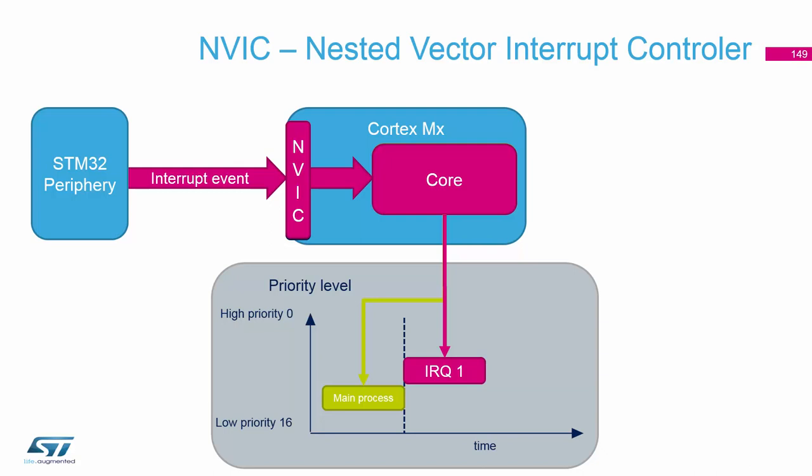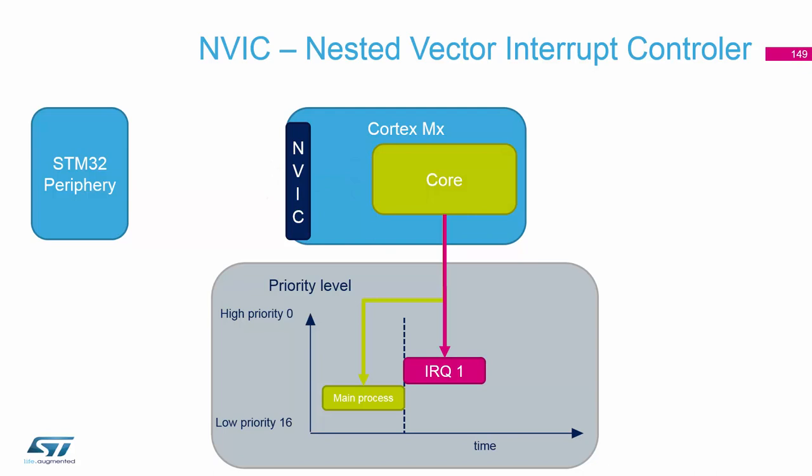When the interrupt handler ends — and also when inside the interrupt handler we clear all the events — the microcontroller returns back into the main process. This is the purpose of the interrupt: to handle asynchronous events during the execution of the main program.